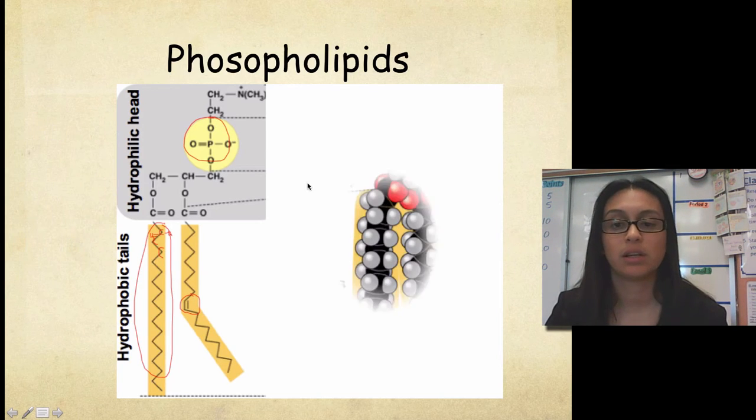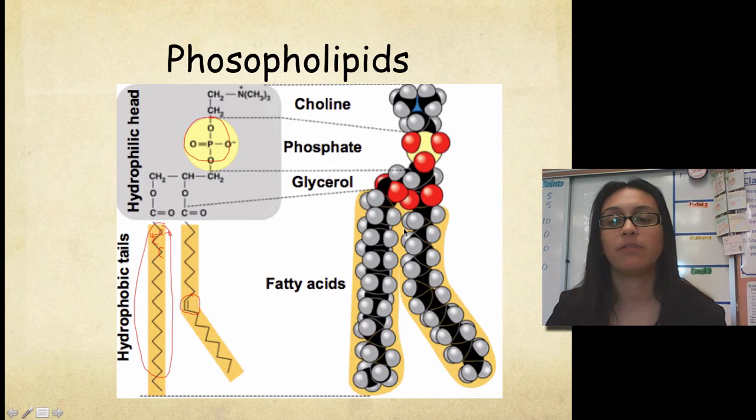So if we take a look like this, we could see the phospholipid in a slightly different way here. And we could see up at the top, we have choline, a phosphate, glycerol in the middle here, and then our fatty acid chains or fatty acid tails.